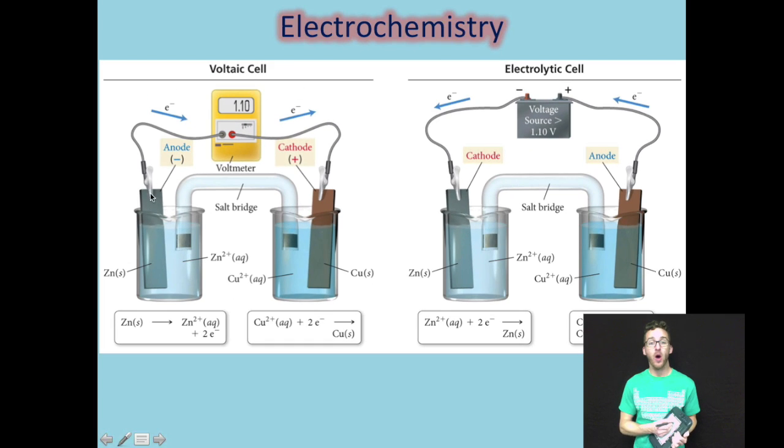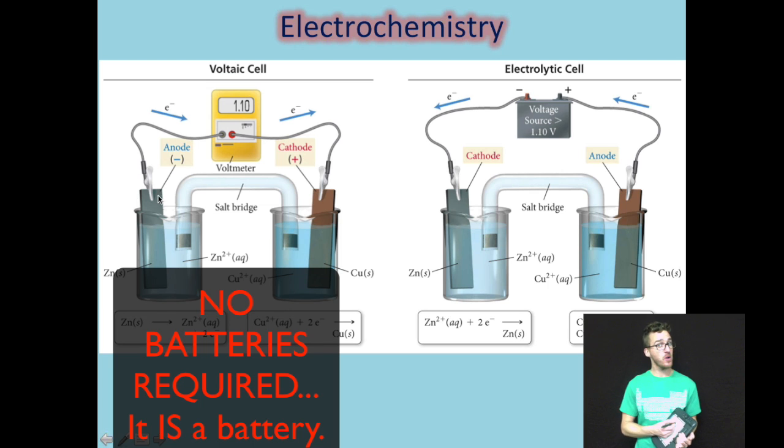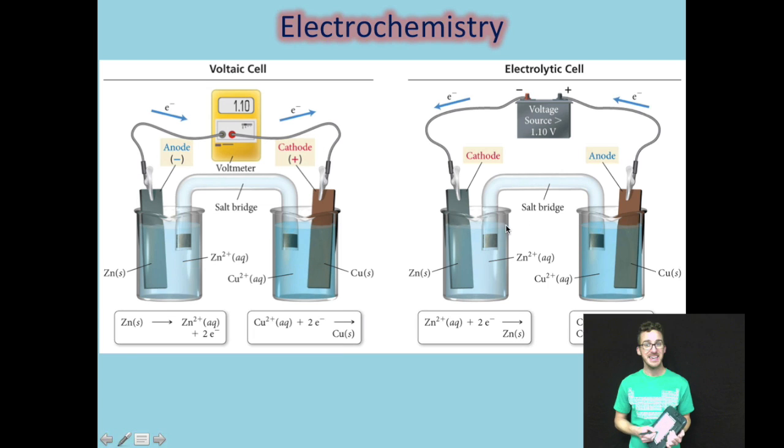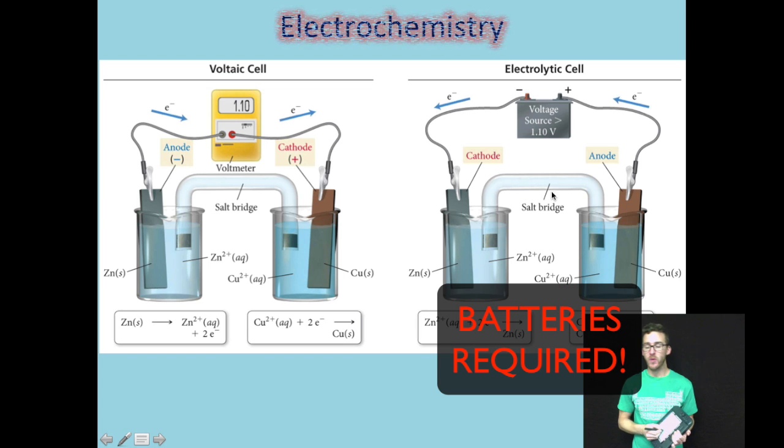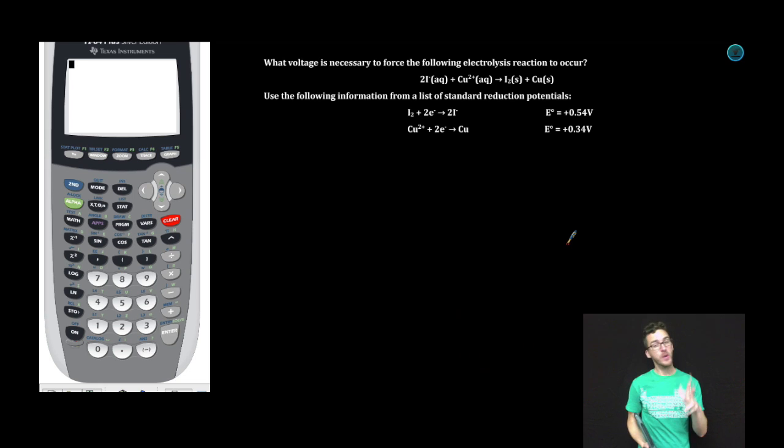Think about what we already know with a voltaic cell, a spontaneous redox reaction that requires no input of energy. The electrons flow from the anode to the cathode. In an electrolytic cell, the big difference here is essentially we are reversing a spontaneous reaction, forcing it to go in the non-spontaneous or thermodynamically unfavored direction. And the only way we're able to do that is by inputting a source of electrical energy. So let's take a quick look at an example that will help clarify the differences between the two.